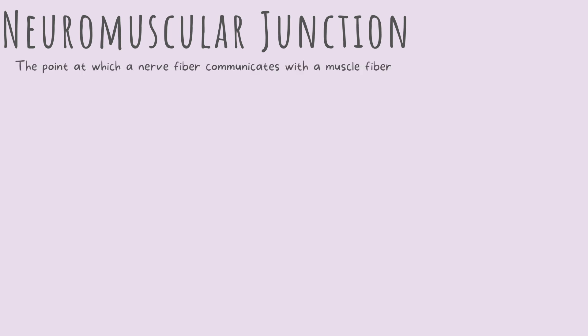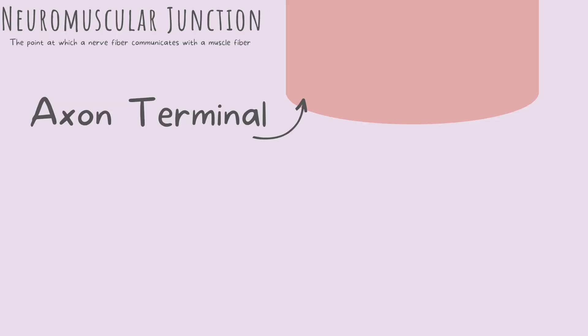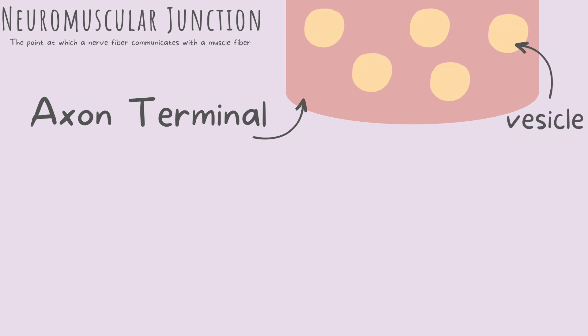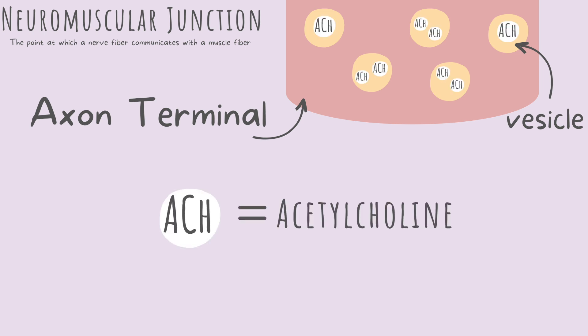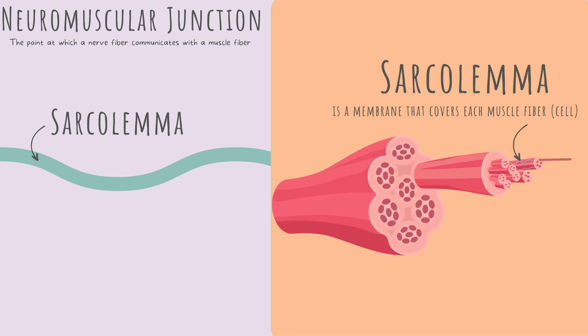Let's now take a look at the neuromuscular junction. The neuromuscular junction is the point at which a nerve fiber communicates with the muscle fiber. Here's an axon terminal of a neuron, and these are the vesicles that contain neurotransmitters. The neurotransmitter involved in the neuromuscular junction is acetylcholine. We also need to talk about the sarcolemma. All you really need to know about the sarcolemma is where it is located — it covers the muscle fibers, as you can see here.